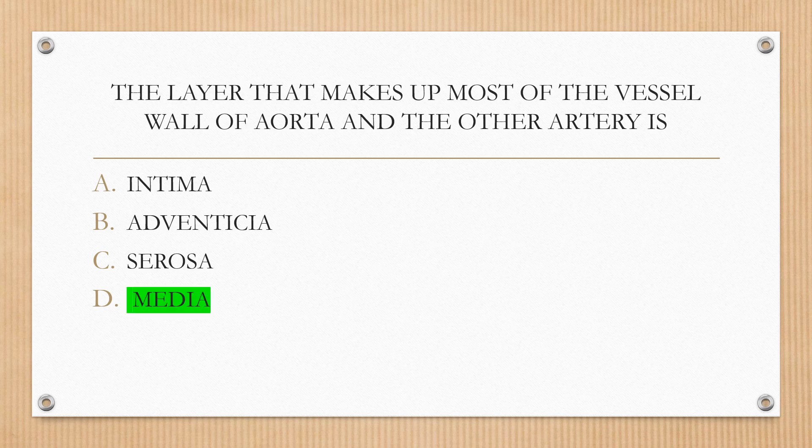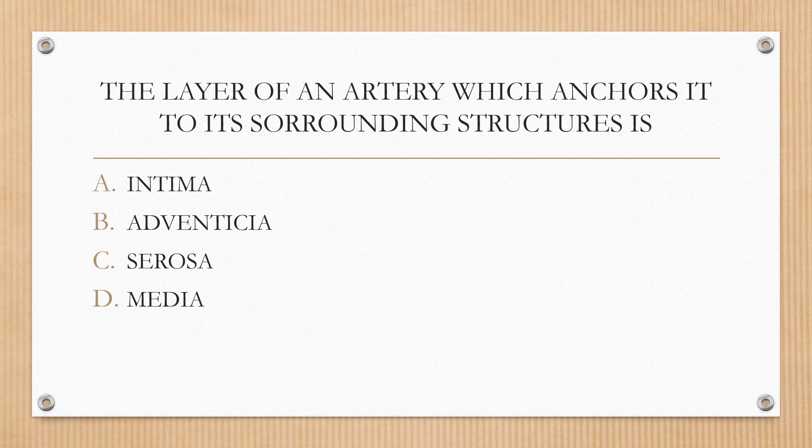Next question. The layer of an artery which anchors it to its surrounding structures is: option A intima, option B adventitia, option C tunica, option D media. The correct answer is option B, adventitia.